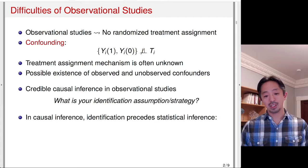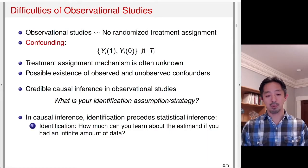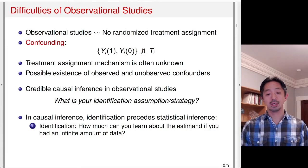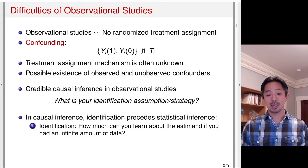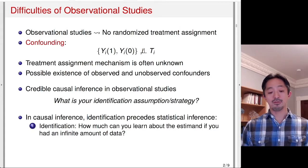In causal inference, identification of causal effects precedes statistical inference about the estimation of causal effects. Identification asks the question: how much can you learn about the causal estimate — the quantity you're interested in — if you have an infinite amount of data? Forget about small sample problems. Even if you had a huge amount of data, if there is selection bias due to unobserved confounders, you still have biased estimates of the treatment effect. The identification question really asks what assumptions you need to make in order to pinpoint the causal effect with infinite data.